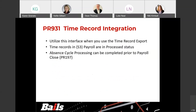We have two programs in S3 for integration: the PR931 and the time record integration program. You utilize this interface when you want to use the time record export from S3. You grab them while they're in a process status, and then you export them up into GHR for processing the transactions within absence management. Again, this is going to take the time records while they're in a process status.